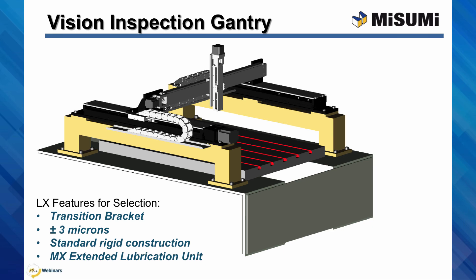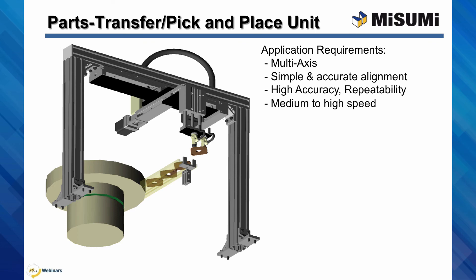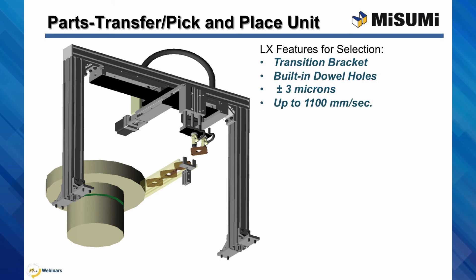This helps minimize the downtime and keeps the system running smooth. Finally, with this parts transfer or pick and place unit, a multi-axis installation with high accuracy and repeatability, simple and accurate alignment, and medium to high speeds are required. The high precision and repeatability provided by the LX, even up to the maximum speed range of around 1,100 mm per second, provides outstanding positioning for precise timed motion, and with built-in dowel holes part of every LX actuator design, alignment and installation is simple and accurate.